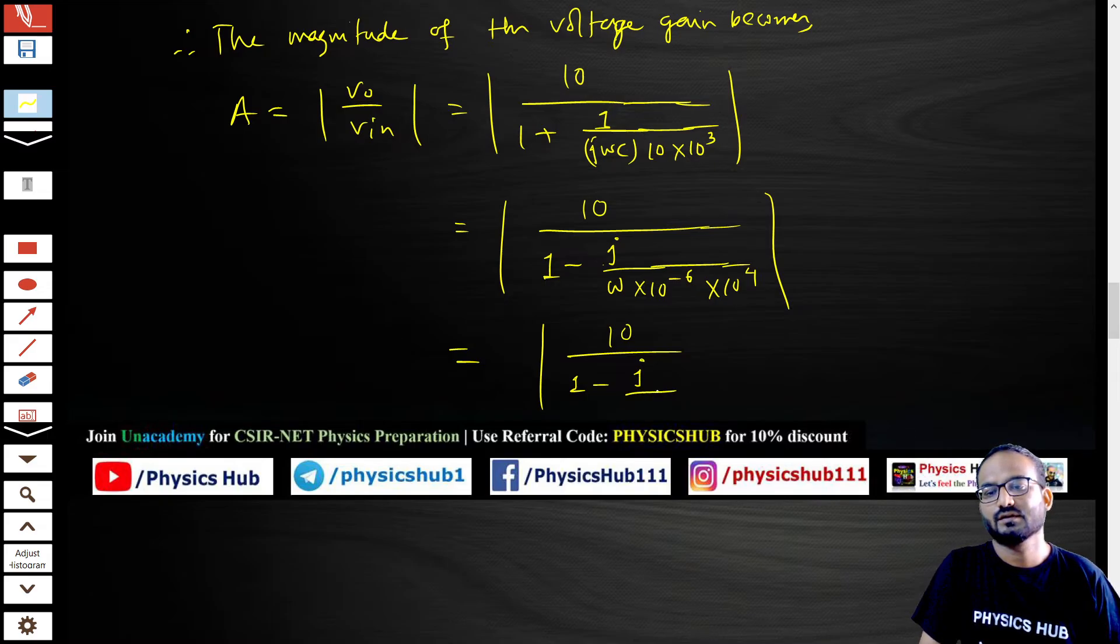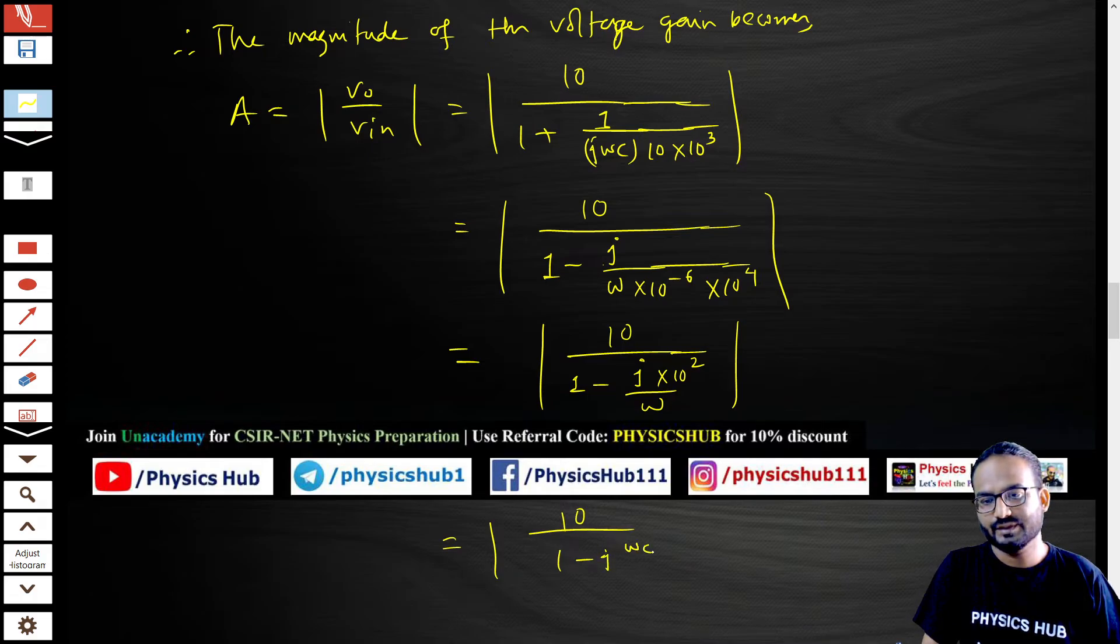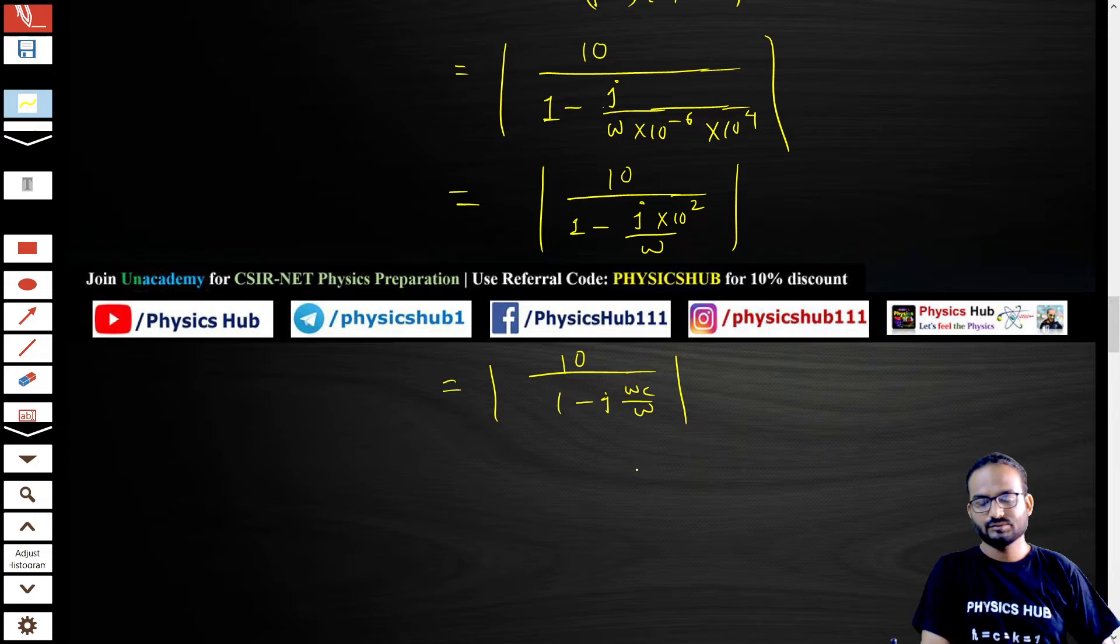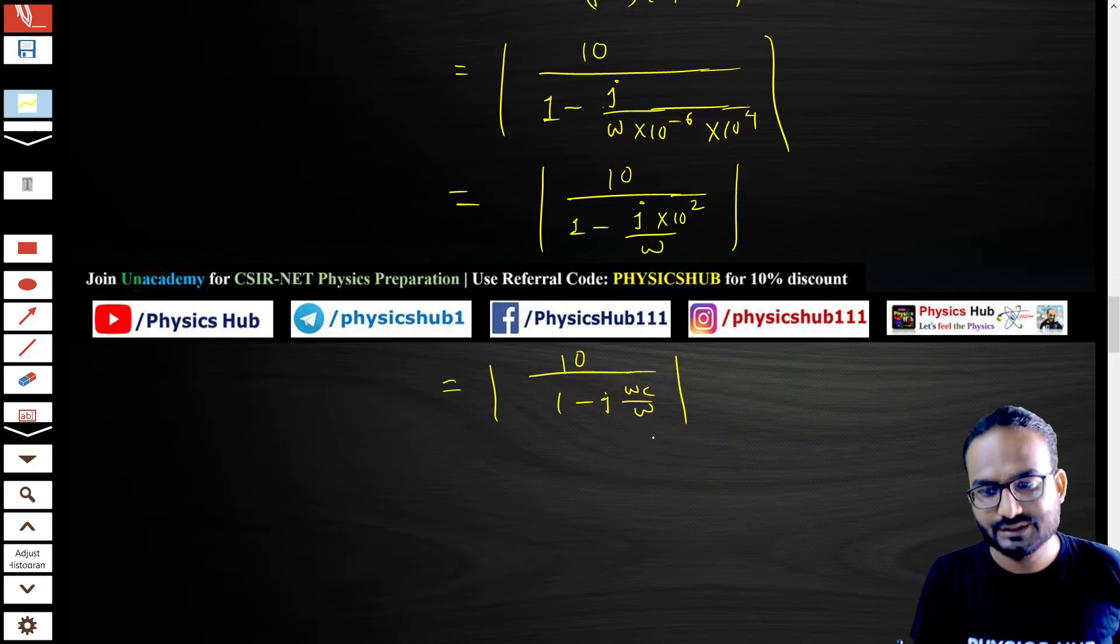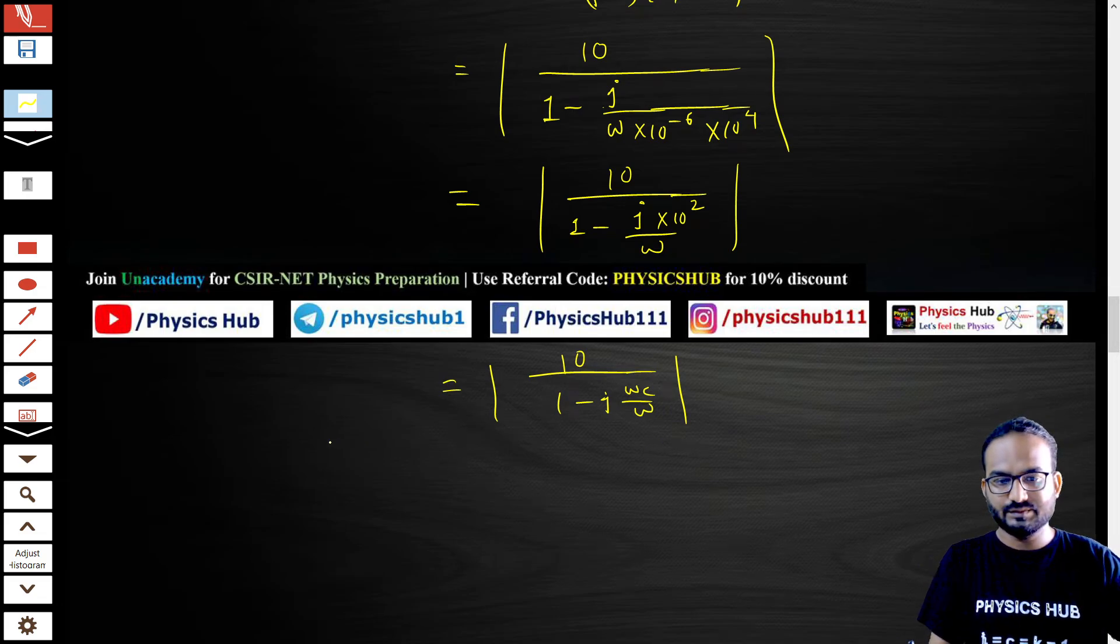What does it become? Finally it's becoming 10 upon 1 minus j divided by 100 times omega. This expression can be written in this way: 10 by 1 minus j omega_C by omega. I think this form of the gain is familiar to you: 10 by 1 minus j omega_C by omega.